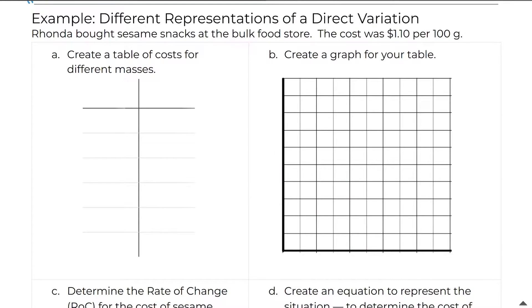Okay, so we have different representations of a direct variation. So let's look at our example. Rhonda bought sesame snacks at the bulk food store. The cost was $1.10 per 100 grams. So part A says to create a table of costs for different masses. So this is our numeric representation. We have masses. This is our independent variable, and it's being measured in grams. And our dependent variable is the cost in dollars. And we know the cost is dependent because the cost depends on how many grams you buy.